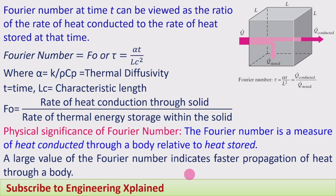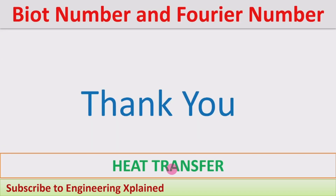Both the Biot number and Fourier number are used in the analysis of transient heat transfer — either in lumped system analysis or when using the transient temperature charts. In the lumped system analysis derived previously, the temperature ratio equals e raised to the power of minus (Biot number × Fourier number). The use of transient temperature charts, where these two numbers are also used, will be discussed next. Thanks for watching.